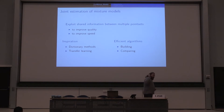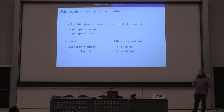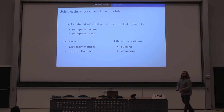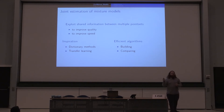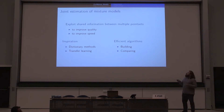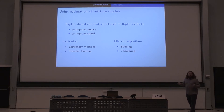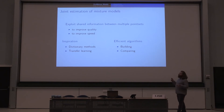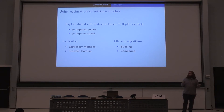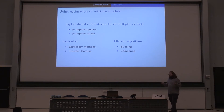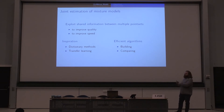Here we have the heart of my work. Previously I spoke about estimating one mixture model given one set of points. Now the goal is to jointly estimate the parameters of multiple mixture models, exploiting shared information between various sets of points to improve the quality of the output mixtures and also the speed — for example, the speed to compare mixtures using an approximation of the Kullback-Leibler divergence. This is deeply inspired by dictionary methods and also by transfer learning, where the main idea is to transfer knowledge between datasets.